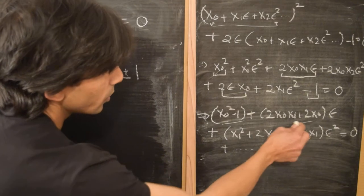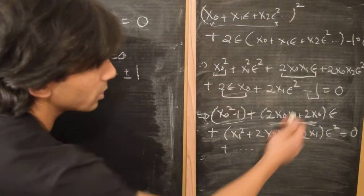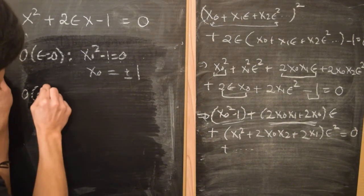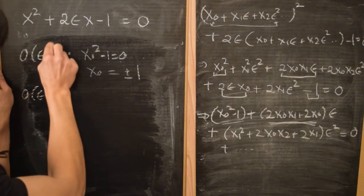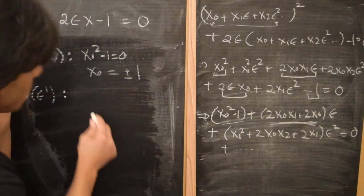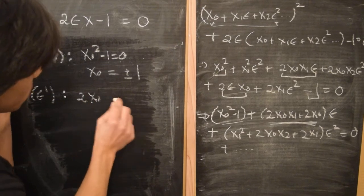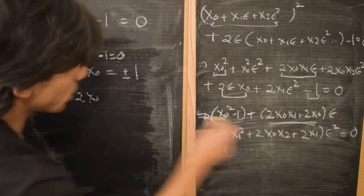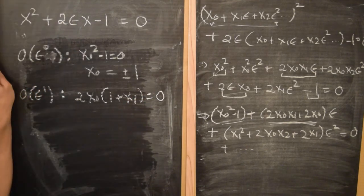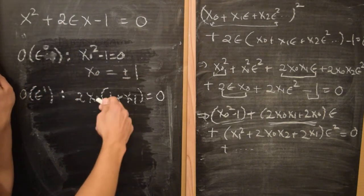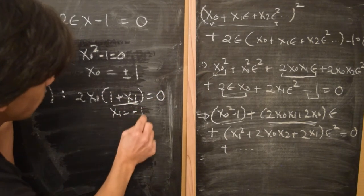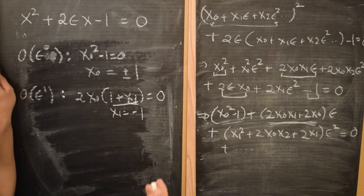The first order solution will be obtained by comparing the epsilon to the power of one term to zero. So this will give us 2x₀ times the common factor, times 1 plus x₁, equal to zero. But we already know that x₀ is either plus or minus one, so it's not zero, which means the only solution is x₁ equals minus one. So that's our second coefficient.